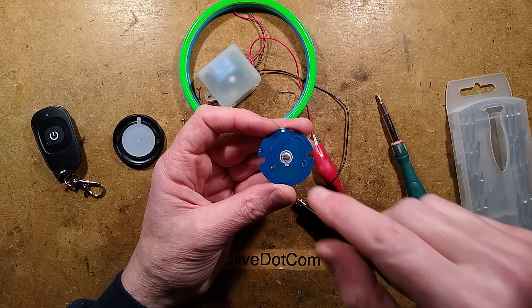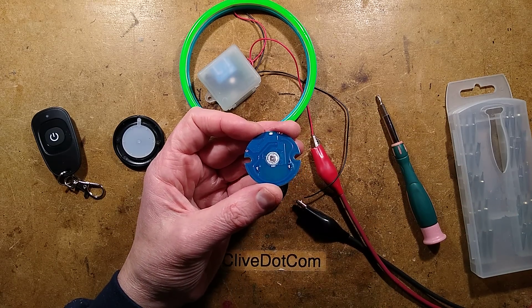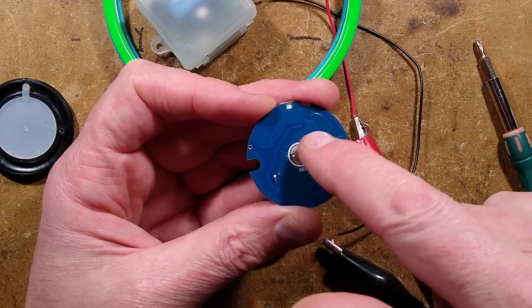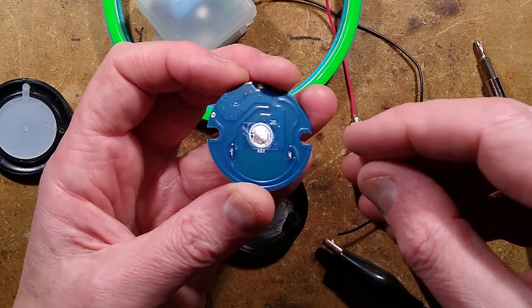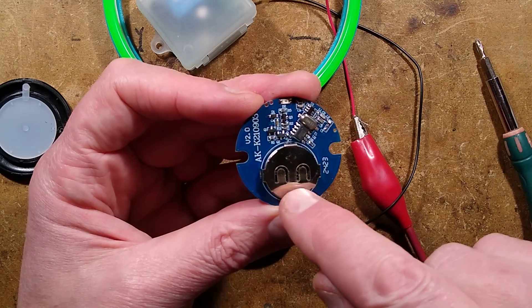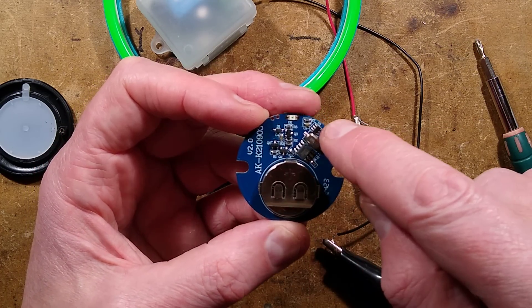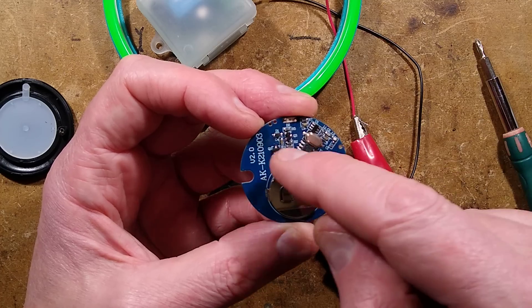So, firstly, I'm seeing on this side, we've got a button and what looks like an antenna going around the outside. Quite a long antenna. On the other side, we have a 2032. We have the chip. Oh, we've got another little chip down there. I wonder what that is. And a couple of transistors.